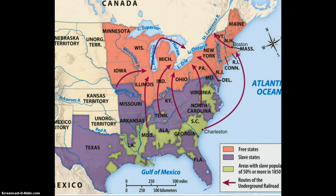This map shows free states and slave states and areas with high slave populations in 1850, along with the routes of the Underground Railroad — all going from the south to the north. You can see that St. Louis is on the path from Mississippi to Illinois, and it was a very important stop.